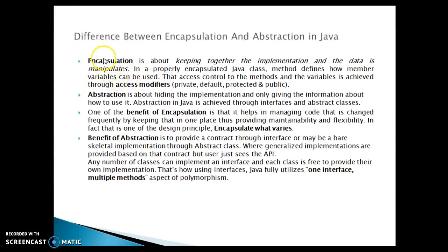Let's briefly cover encapsulation. Encapsulation is about keeping together the implementation and the data it manipulates. In a properly encapsulated Java class, methods define how member variables can be used. Access control to the methods and variables is achieved through access modifiers like private, default, protected, and public. One benefit of encapsulation is that it helps manage code that changes frequently by keeping it in one place, providing maintainability and flexibility. This is also a design principle: encapsulate what varies — encapsulate the things that change very frequently.